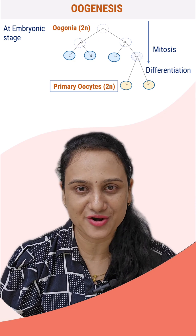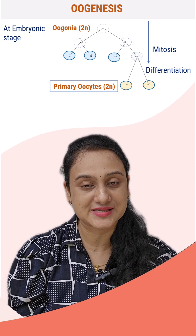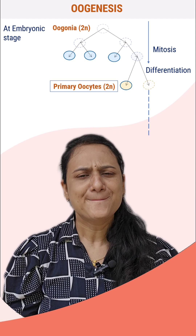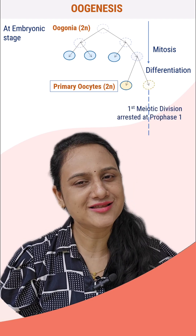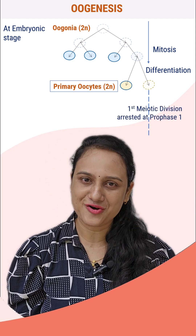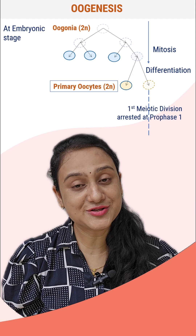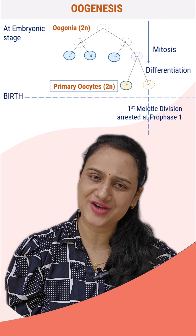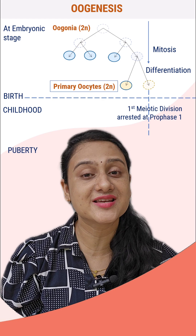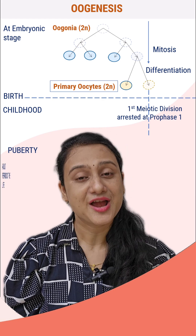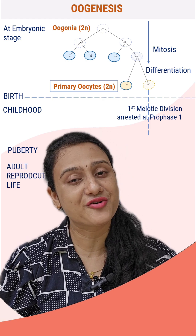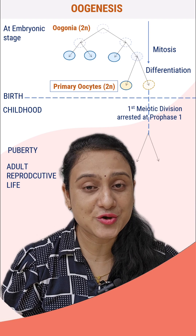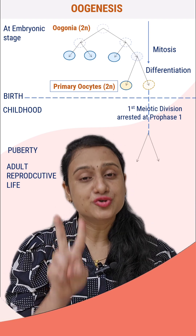The primary oocyte has 46 chromosomes and undergoes meiosis 1, but gets arrested at the diplotene stage of prophase 1 of meiosis 1. It resumes only after the female child is born, her entire childhood is passed, and puberty is reached. During the significant increase of gonadotropin-releasing hormone at puberty, meiosis 1 resumes.